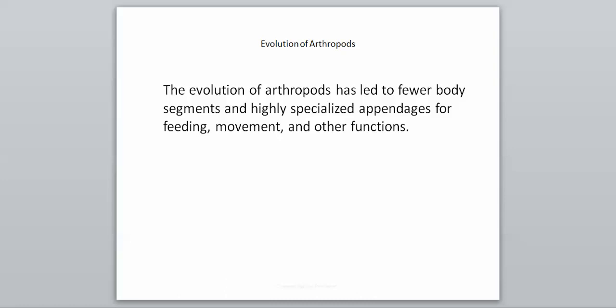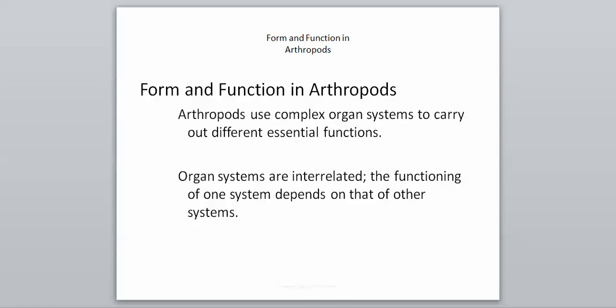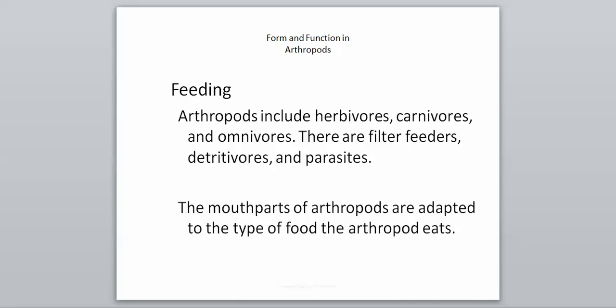The evolution of arthropods has led to fewer body segments and highly specialized appendages for feeding, movement, and other functions. Instead of having many appendages, they have a specific number, each able to do a certain job. Arthropods use complex organ systems to carry out different essential functions, and these organ systems are all interrelated — the functioning of one system depends on others. For example, in order for the circulatory system to run correctly, the nervous system has to be doing its job as well.